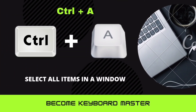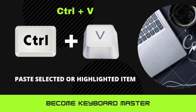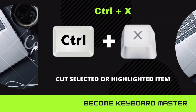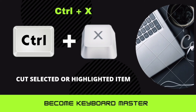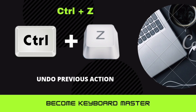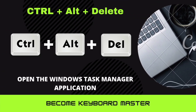Ctrl plus A is used to select all items in a window. Ctrl plus C is used to copy the selected or highlighted item. Ctrl plus V is used to paste the selected or highlighted item. Ctrl plus X is used to cut the selected or highlighted item. Ctrl plus Z is used to undo a previous action. Ctrl plus Y is used to redo an action. Ctrl plus Alt plus Delete is used to open the Windows Task Manager application.